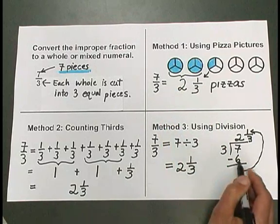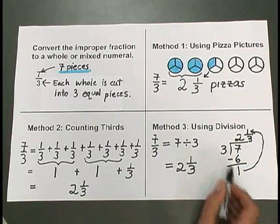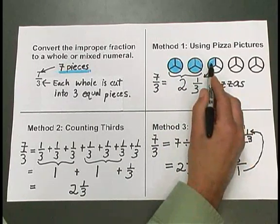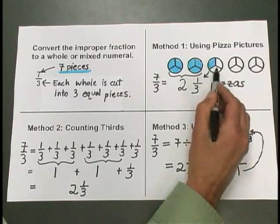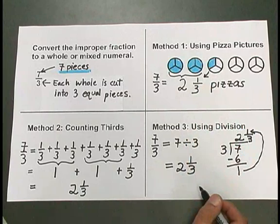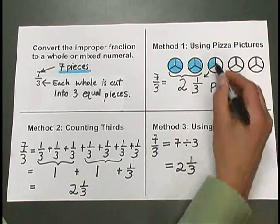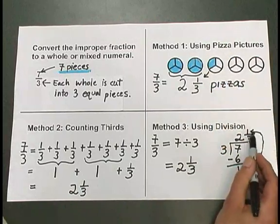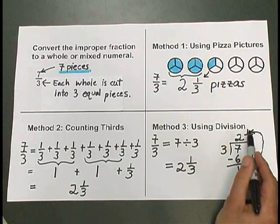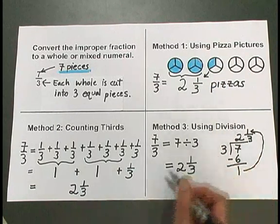7 minus 6 is 1, the 1 that we get here represents the 1 piece of pizza that came out of the 3rd pizza, where we only took 1 piece. That 1 piece out of 3 total in 1 whole pizza is represented by writing 1 over 3 in our answer to the division.